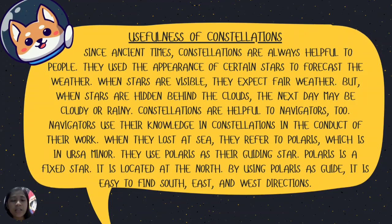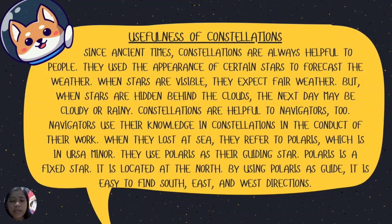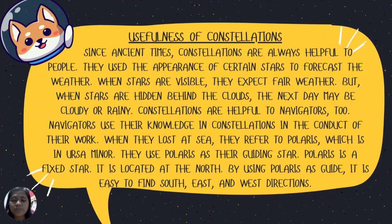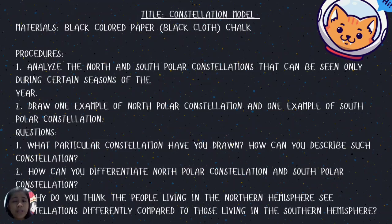When navigators are lost at sea, they refer to Polaris, which is in Ursa Minor. They use Polaris as their guiding star. Polaris is a fixed star located at the north, and by using Polaris as a guide it is easy to find south, east, and west directions.